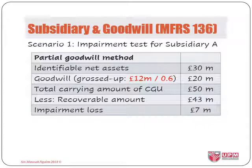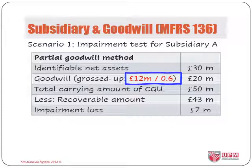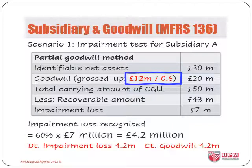Using the goodwill value from partial goodwill method, we first determine the value at 100% because the identifiable net asset and the recoverable amount are both at 100% value of the subsidiary. We do this by dividing the goodwill value by 0.6 to get 100% value, giving us £20 million. Adding £20 million to the identifiable net asset gives £50 million. Comparing with the recoverable amount, we have an impairment loss of £7 million. This impairment loss reduces the carrying amounts of goodwill at 60%, which is £4.2 million.